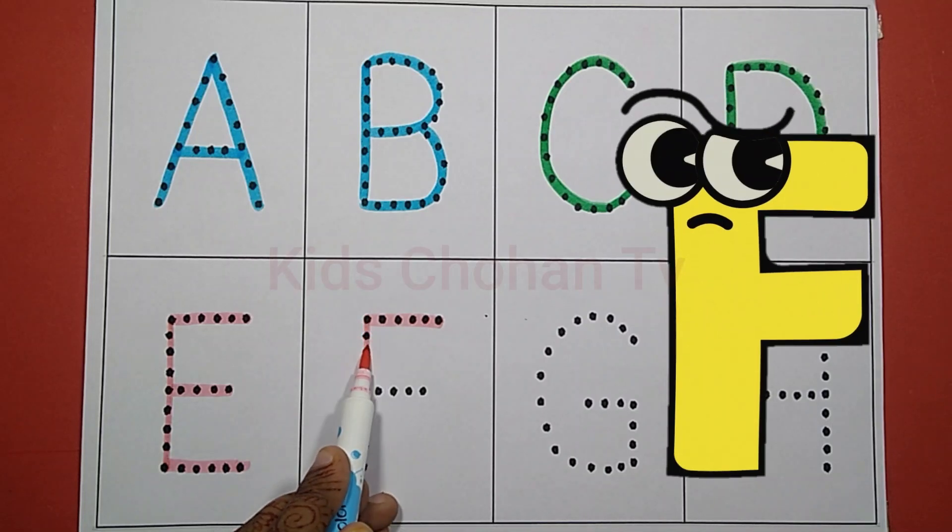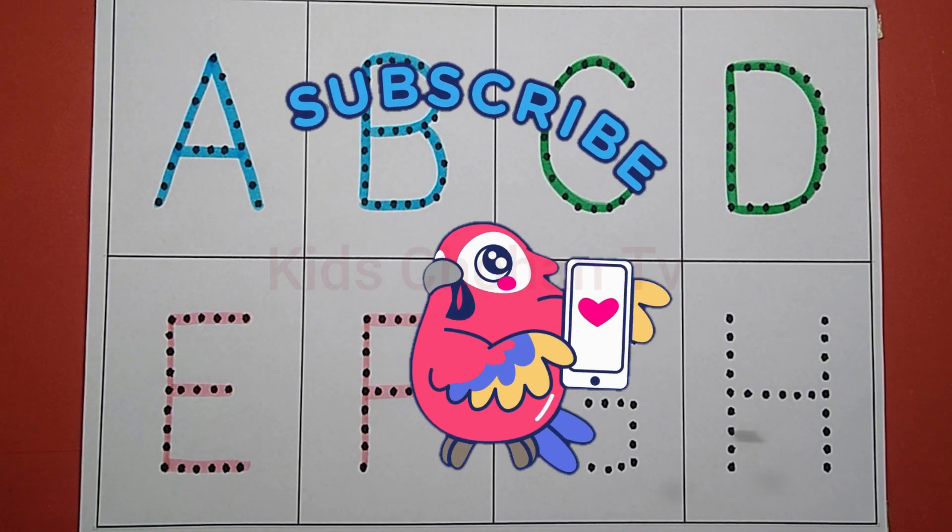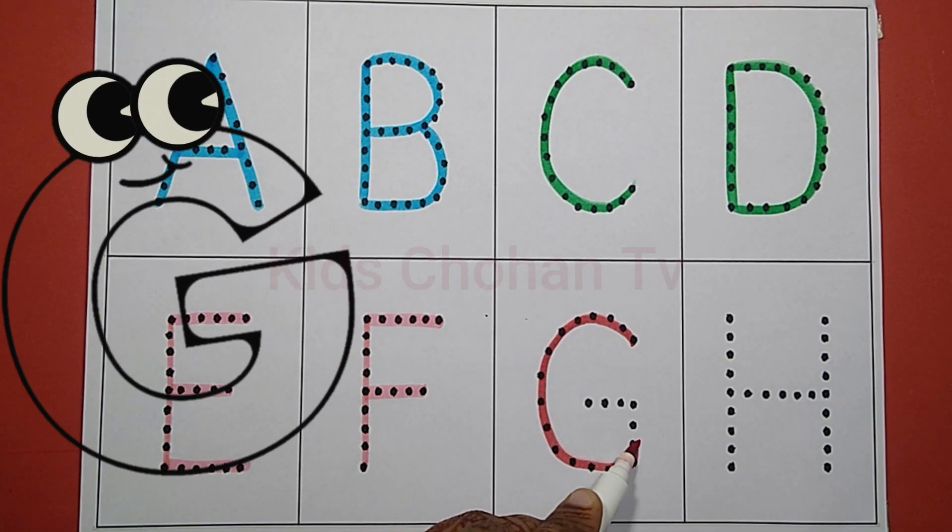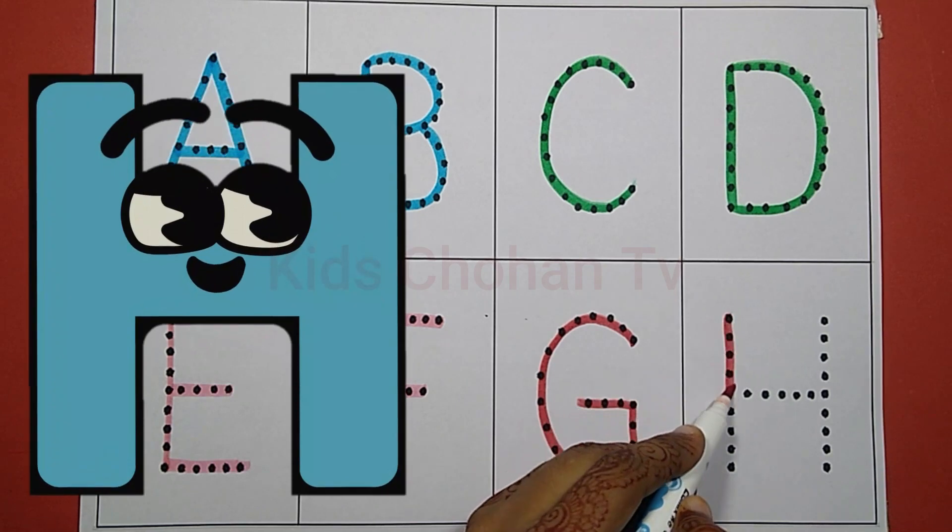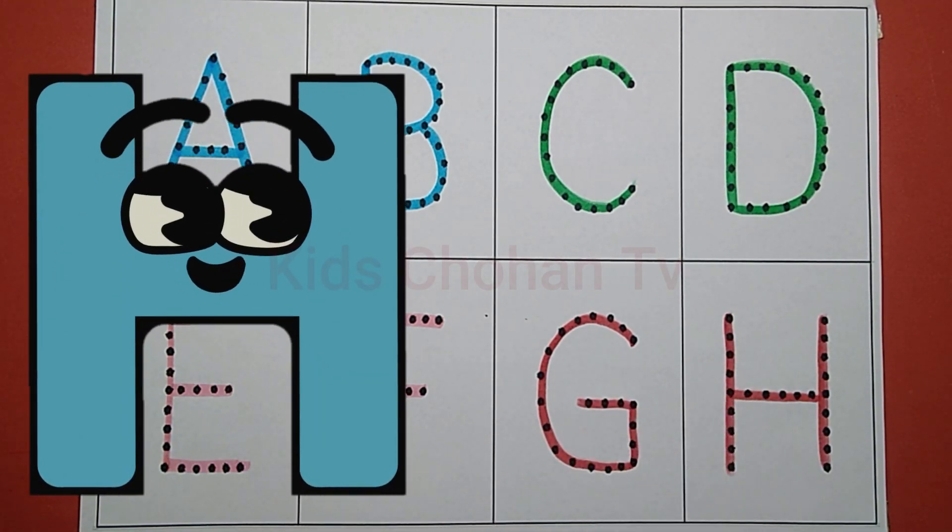A, B, C, D, E, F, G, H, I, J, K, L, M, N, O, P, Q, R, S, T, U, V, W, X, Y, Z. Now I know my ABCs.